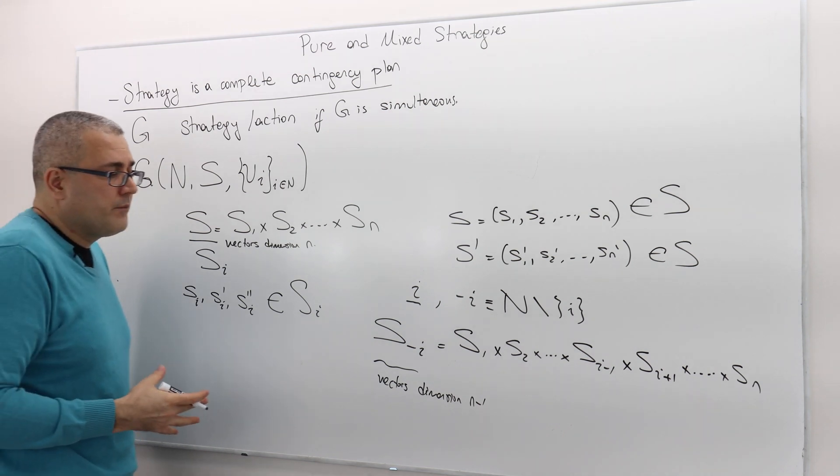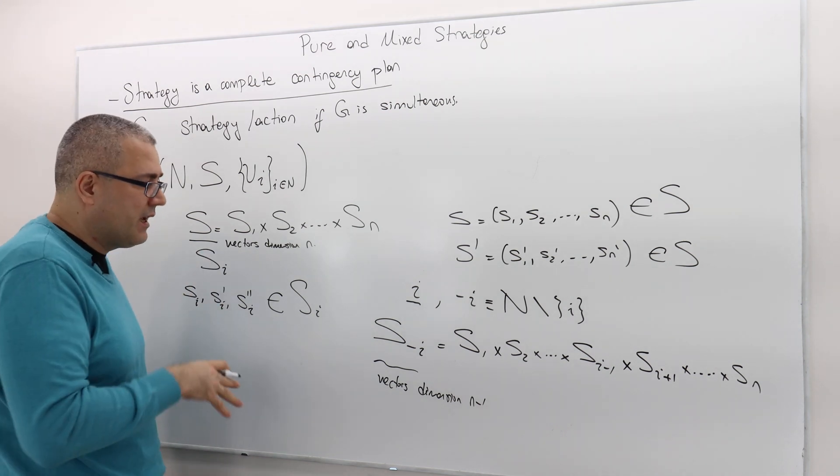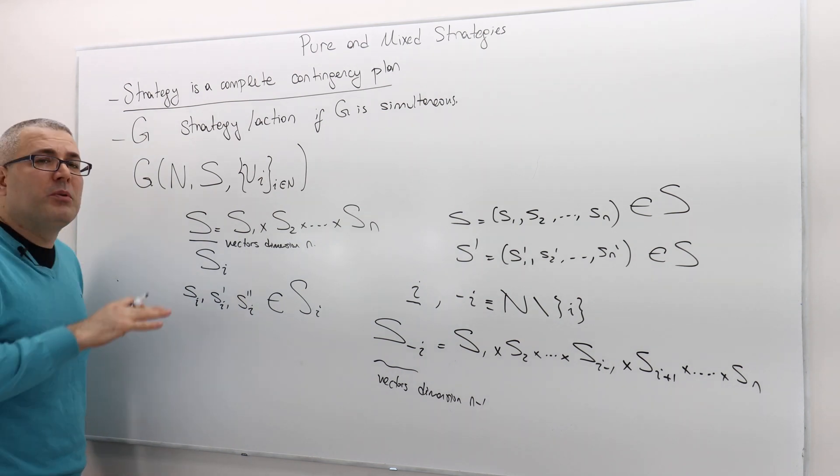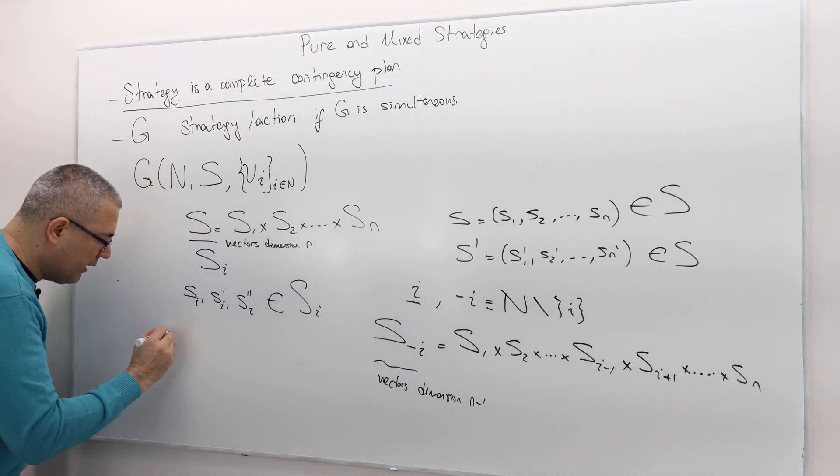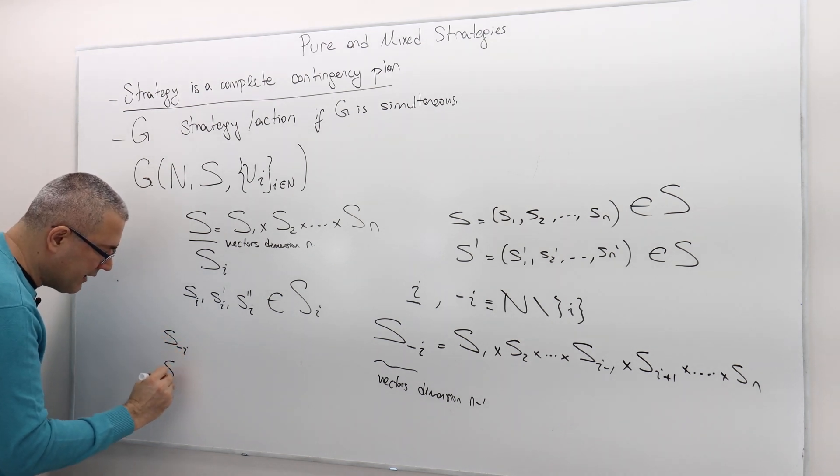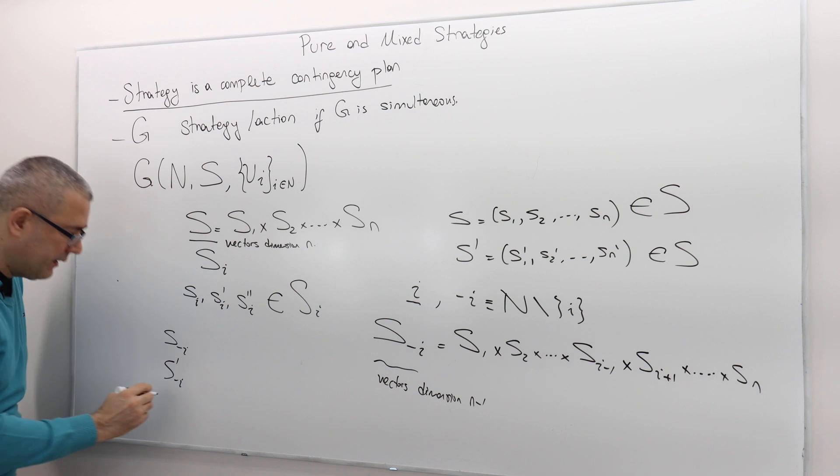Therefore, if I want to sort of call out some strategy profile of player I's opponents, I use S minus I, for example, or S minus I prime, or S minus I double prime.